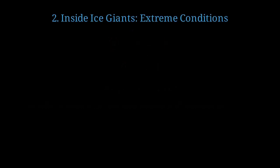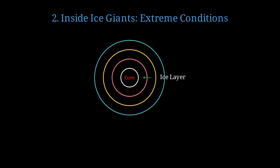Let's explore the extreme conditions inside Uranus and Neptune. Ice giant planets like Uranus and Neptune have layered structures. The middle layer contains exotic ice under tremendous pressure.